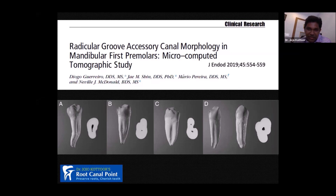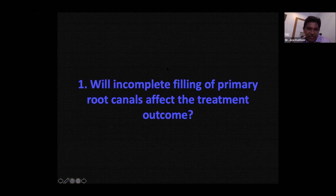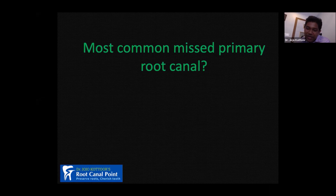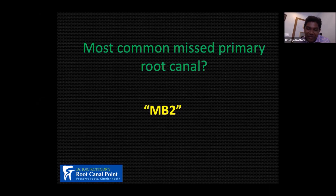Will incomplete filling of a primary root canal affect treatment outcome? The answer is obviously yes. The most commonly missed primary canal is the MB2. In the 1990s, MB2 was not considered a primary canal — once you had three canals, you would obturate. Now MB2 is considered a primary canal, not a secondary one. Almost 90% of the cases I do in my clinical practice have an MB2 canal — something we generally miss in routine endodontic treatment.